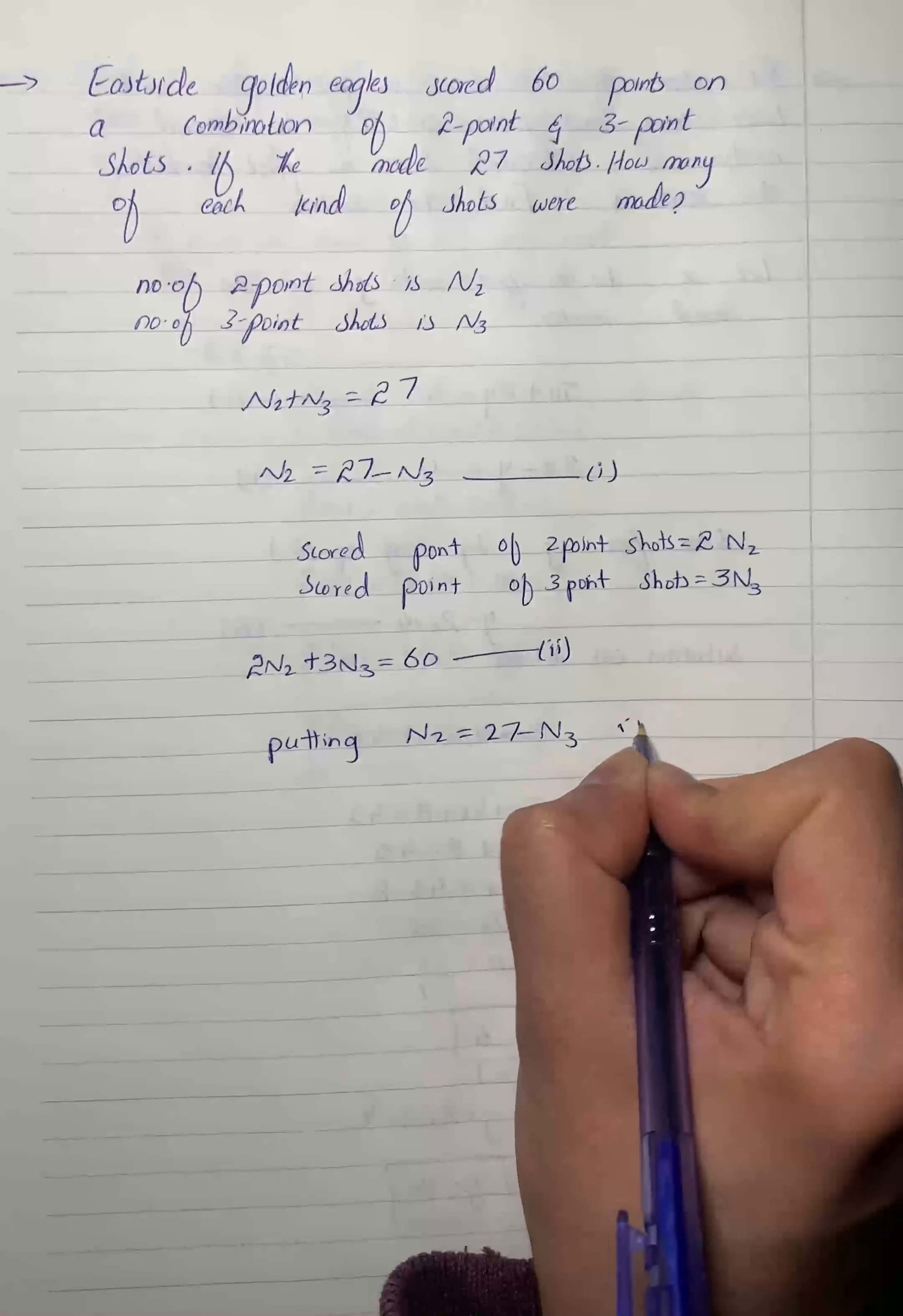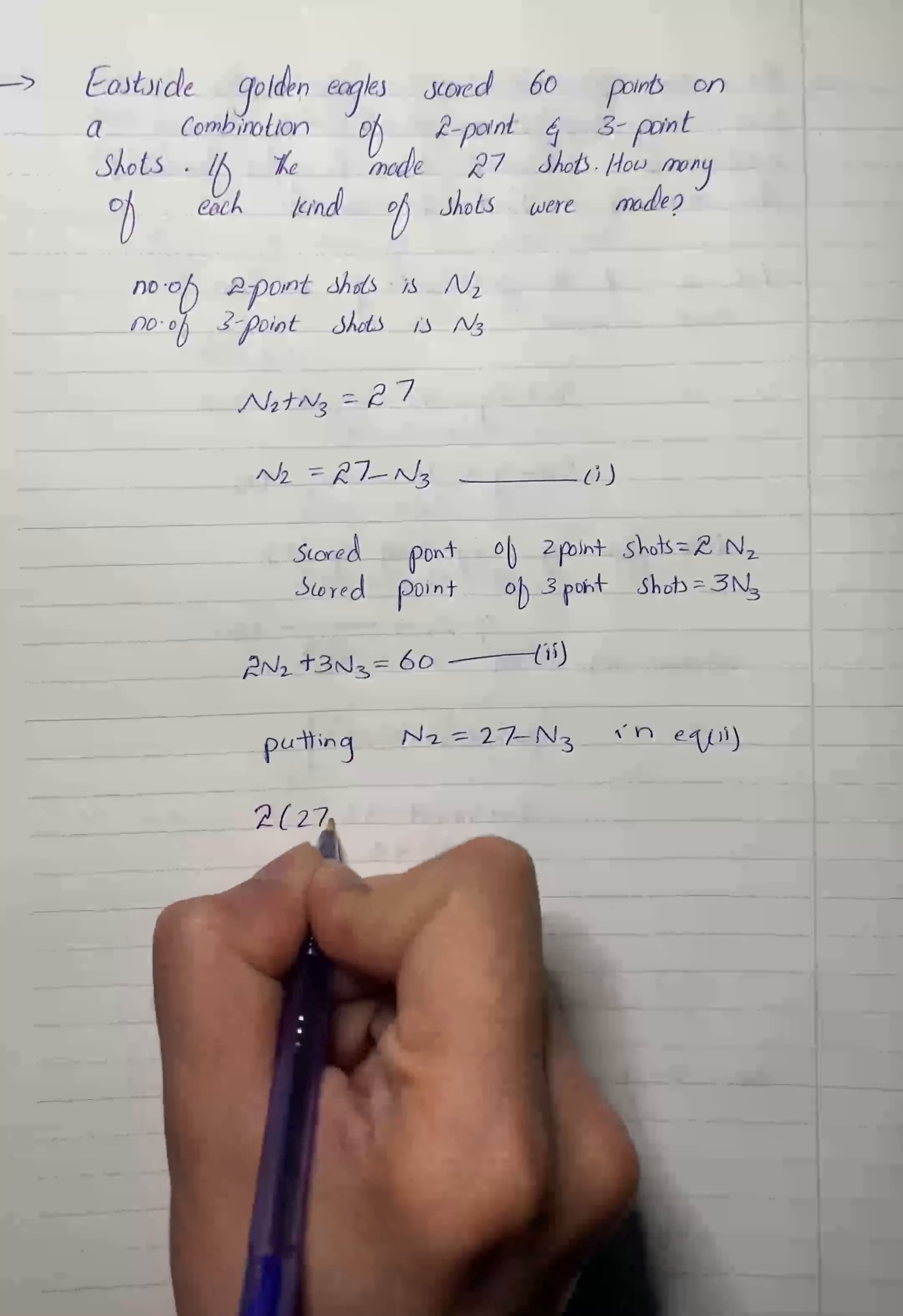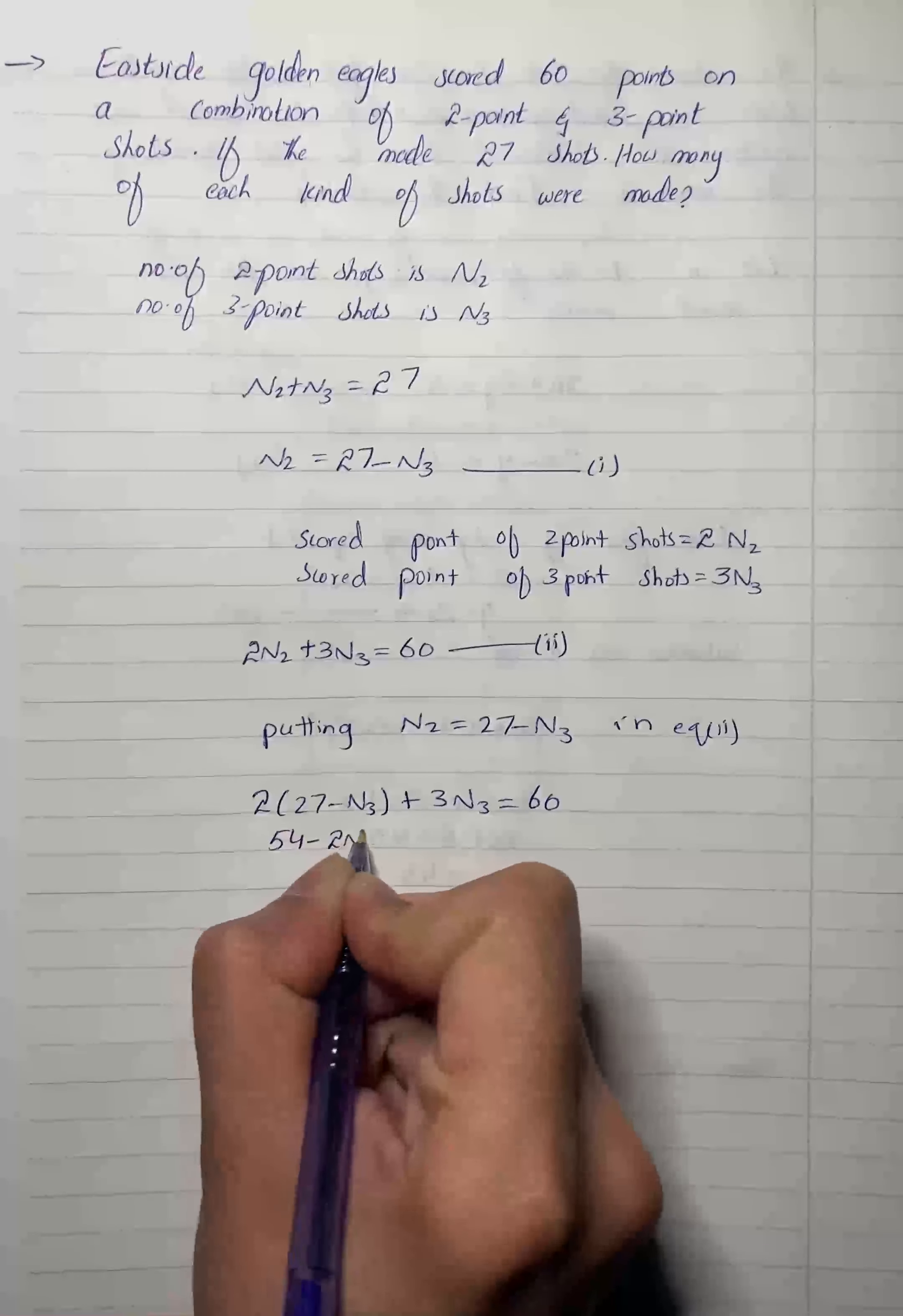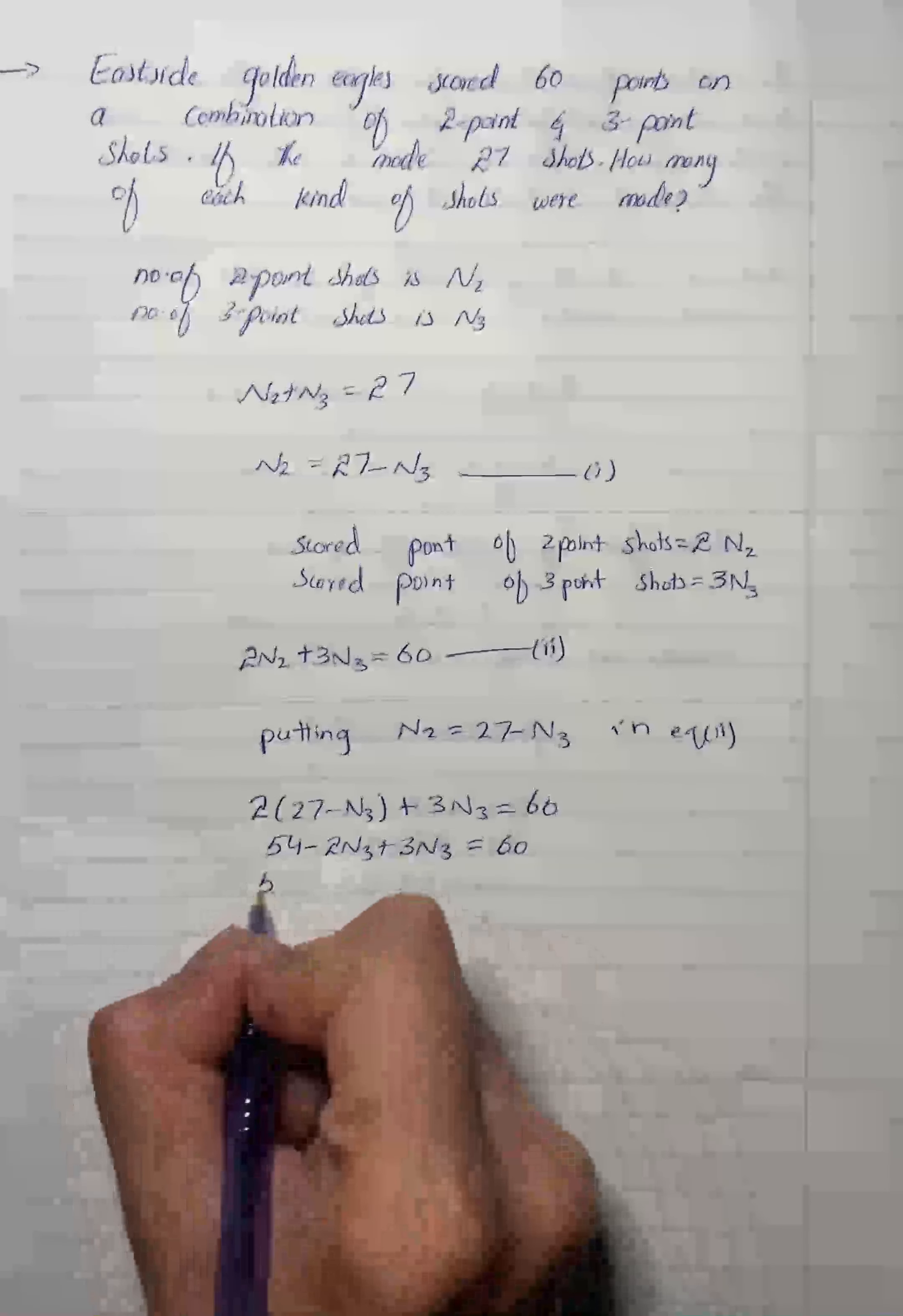Putting in equation 2, we get 2 times 27 minus n3 plus 3n3 equals 60. On simplification it will be 54 minus 2n3 plus 3n3 equals 60.